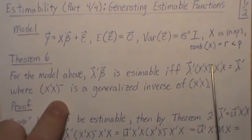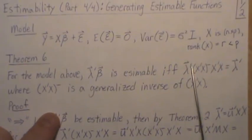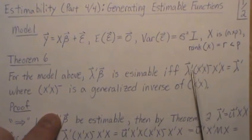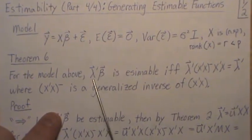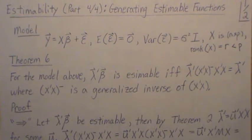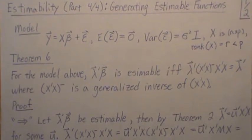let this function be estimable if and only if this criteria happens, where of course, the dash is a generalized inverse. So you take this matrix, multiply it by lambda, and if you get lambda back, then that's estimable. And that's pretty cool. That's an easy check to see if something's estimable.